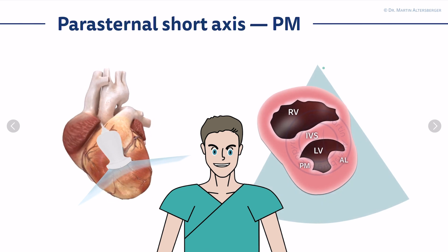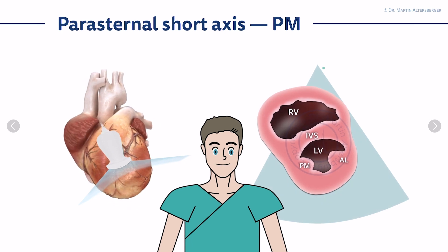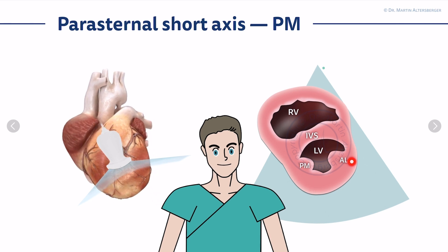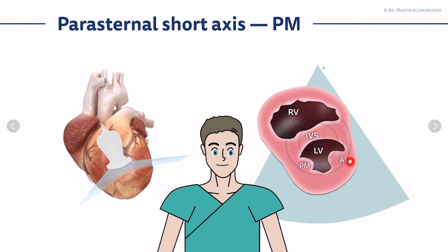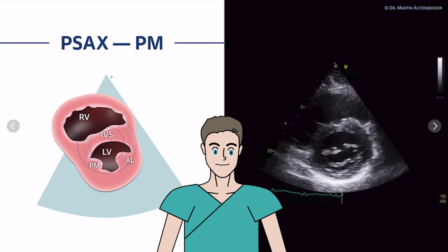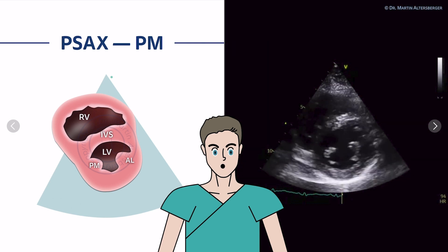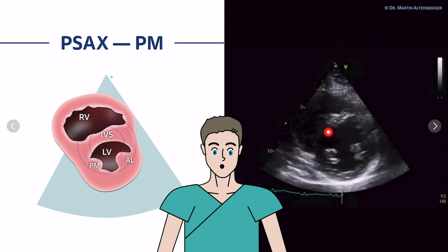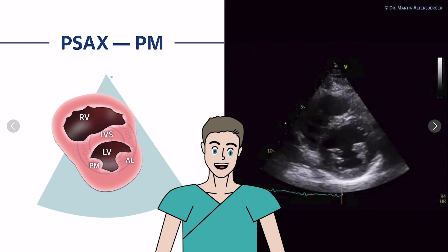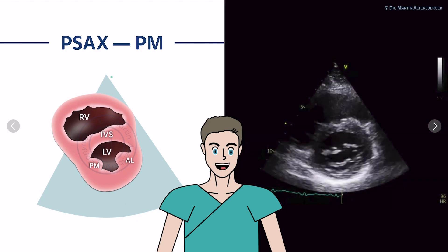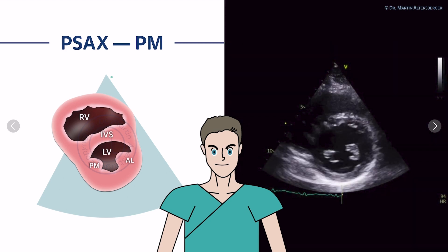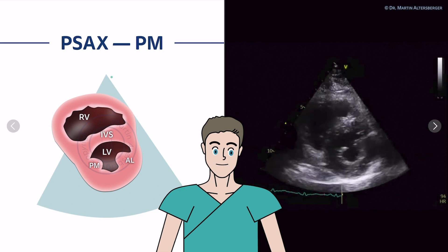The next view to discuss is the papillary muscle view. By tilting from the aortic valve to the mitral valve and toward the apex, we arrive at another view of the left ventricle showing the posterior medial and the anterior lateral papillary muscle. We see the cavity of the left ventricle — first parts of the mitral valve, then the level of the papillary muscles with a nice round left ventricle and normal left ventricular function. Also focus on the pericardium; sometimes you can see pericardial effusion.